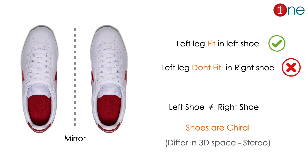Before getting to that, you have to know what chirality really is. Chiral means there is a three-dimensional difference. We can understand it by the shoe analogy. Shoes are mirror images of each other, but they are three-dimensionally different. The left shoe never fits the right leg and vice versa. So left shoe is definitely not equal to right shoe — they are different in space. This concept we are going to apply to our compound, which is allene.